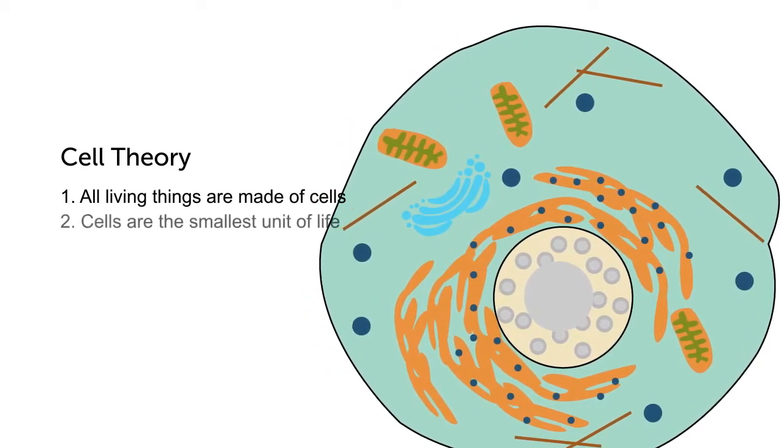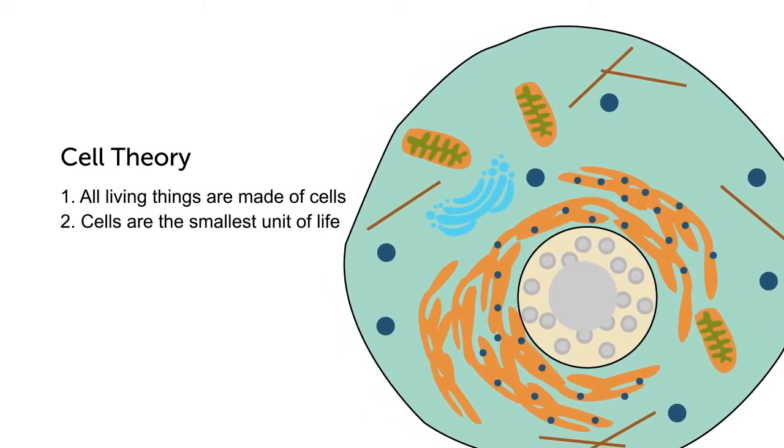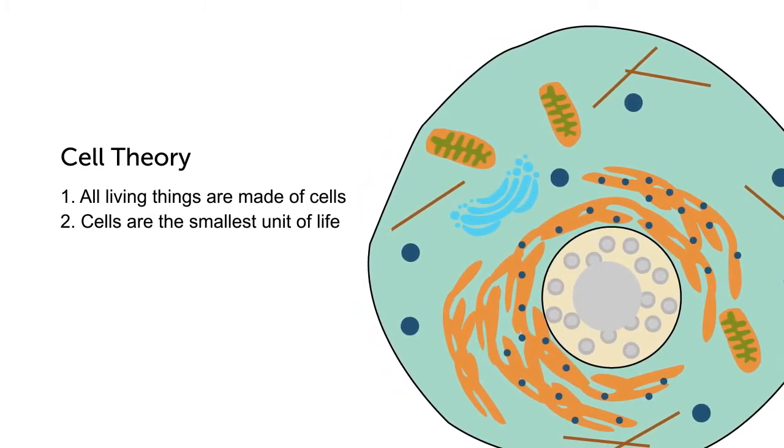Second, cells are the smallest component of living things. The smallest unit of life is the cell. The smallest a living thing can ever be is one individual cell.